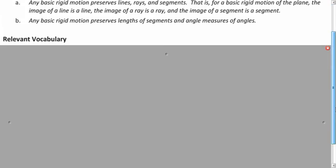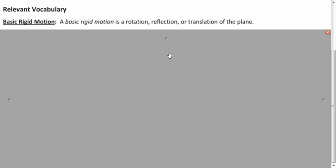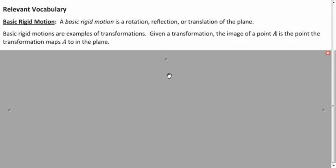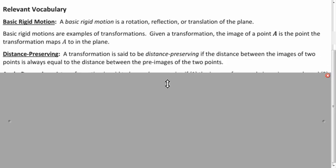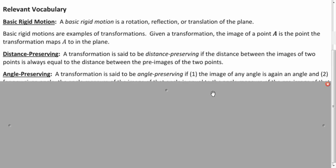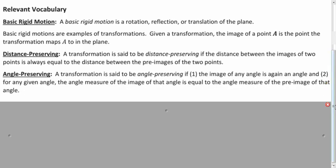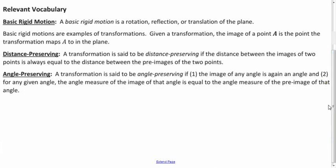And some vocab. We've already talked about basic rigid motions. It's one of those three. Distance preserving means that if you pick any two points in the images, that the corresponding two points in the pre-image will have the same distance. So distance isn't changing. And angle preserving, similarly, if you measure any angle in the image, that will be the same as the measurements from the pre-image.